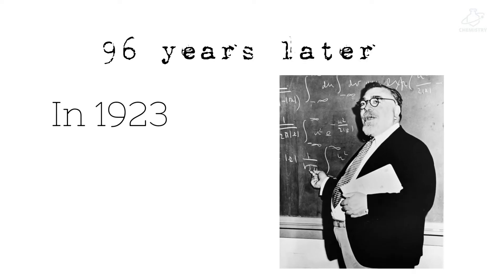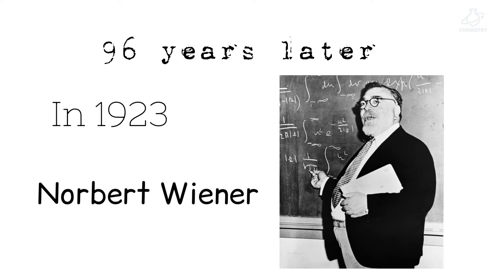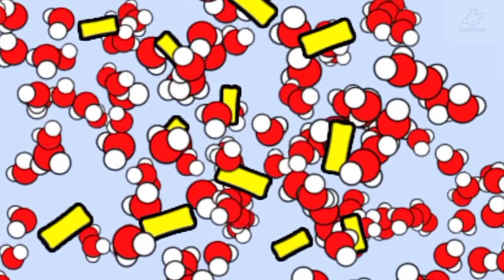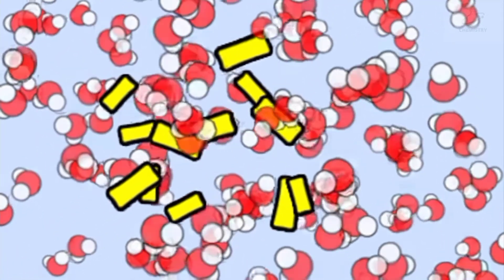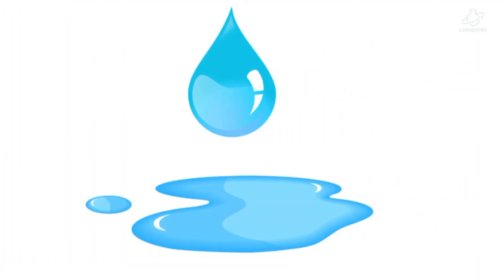It was 96 years later, in 1923, that another scientist called Norbert Wiener explained what Brown had observed. He said that the pollen grains were moving because the much smaller and faster-moving water particles were constantly colliding with them.